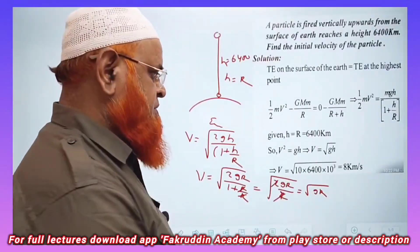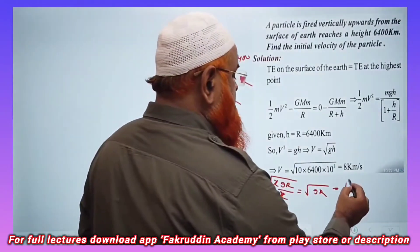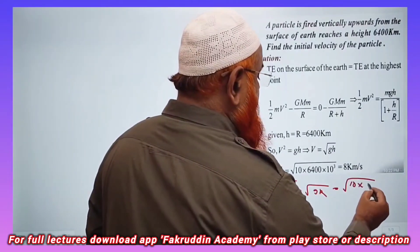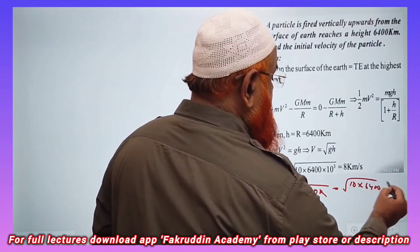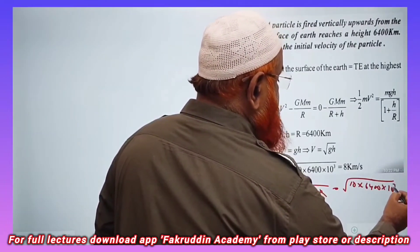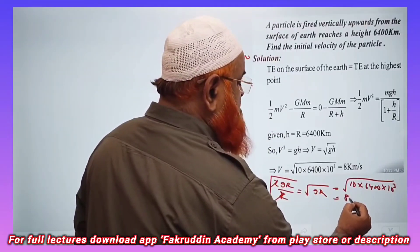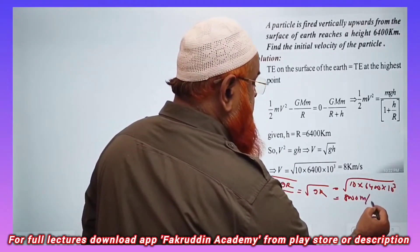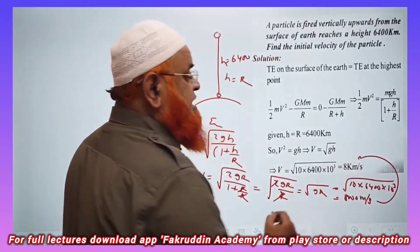Now g is nothing but 10 and radius is 6400 times 10 to the power 3. So we'll be getting nearly 8000 meters per second, which is nothing but 8 kilometers per second.